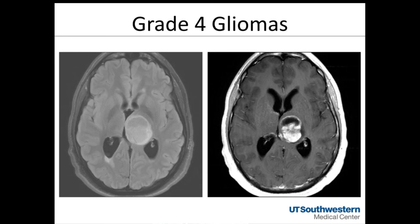This is an H3K27M mutant thalamic astrocytoma who presented with headache but was otherwise neurologically well. After reviewing his neurologic exam, tumor location, size, and functional MRI results, an aggressive surgical approach was deemed safe. He did well with surgery, returned to full-time work at six weeks, and ultimately passed with this tumor. He lived for about two to two-and-a-half years, whereas the median survival for these lesions is about 12 to 14 months — suggesting surgery likely played a role in improving his survival.